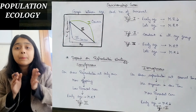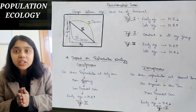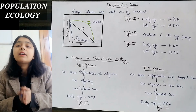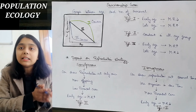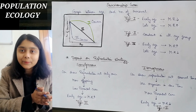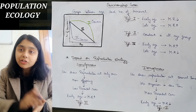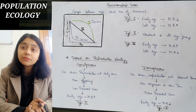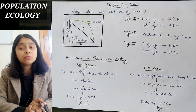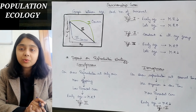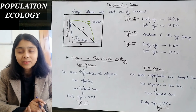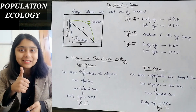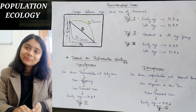This was our reproductive strategy — how the survivorship curve depends on reproductive strategy. This was the survivorship curve. It always comes from 4 marks and 2 marks. Best of luck. Thank you.